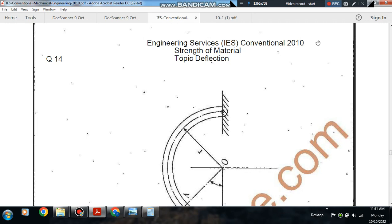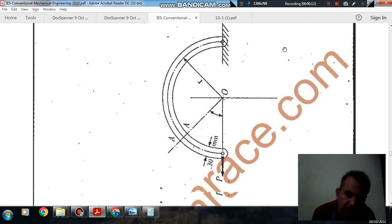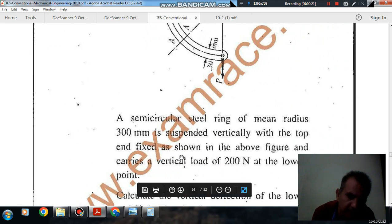Hello, welcome again. We are solving some conventional questions of strength of materials. The topic is deflection. Question number 14 from Engineering Services Conventional 2010 Examination is: a semi-circular steel ring of mean radius 300 mm is suspended vertically with top end fixed as shown in the above figure.